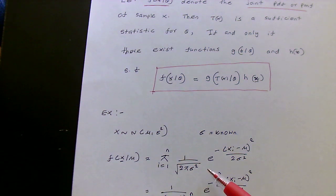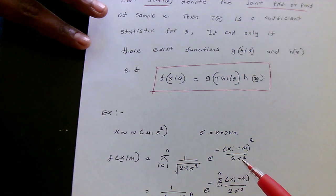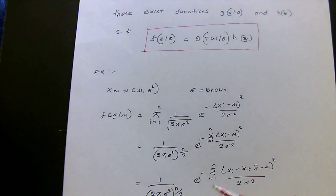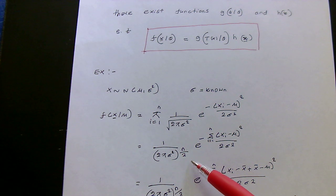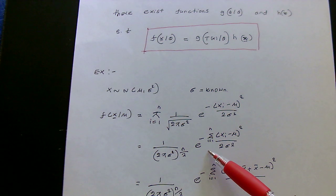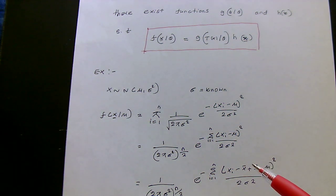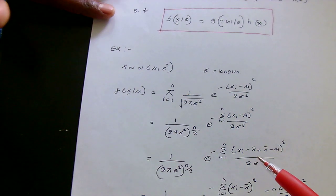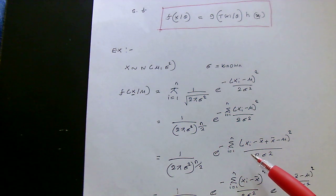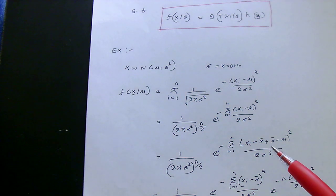We can write the joint probability density function as a product because these random variables are independent and identically distributed. If you look at each elementwise term, you can see that the first component is independent of i, so you can write it as 1 over (2 pi sigma squared) to the power n over 2, and then we have e to the power of negative summation of (xi minus mu) squared divided by 2 sigma squared. After this, I am going to do a trick: I will add and subtract x-bar to this exponent.